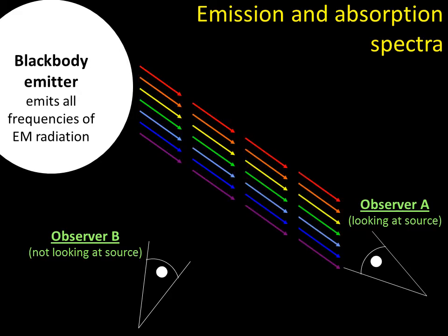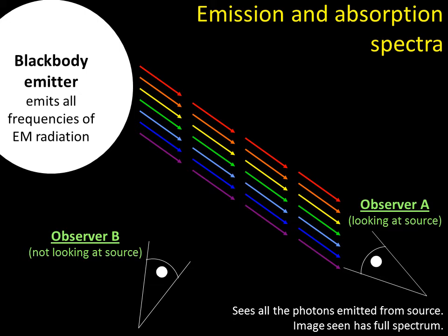Okay, the first person, Observer A, well, they get all the colours of the rainbow, all the frequencies of the EM radiation, so they see everything. They see a full spectrum of every single thing, because every single photon hits them straight in the eyes.